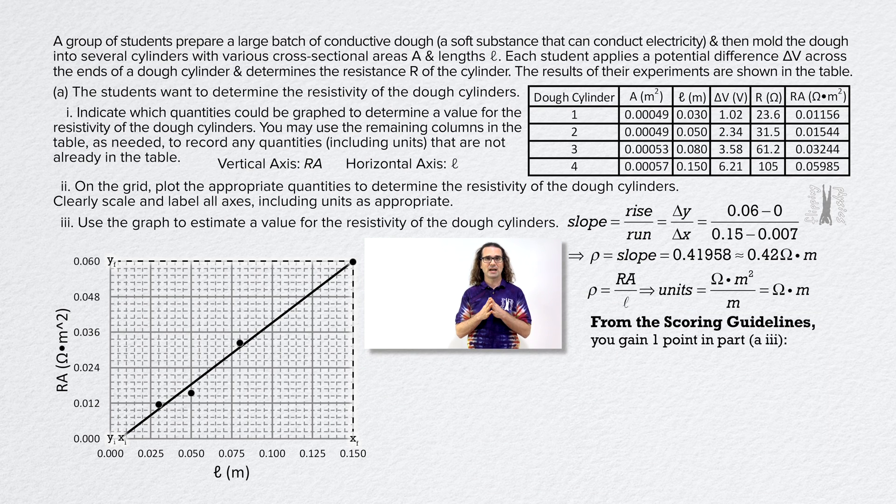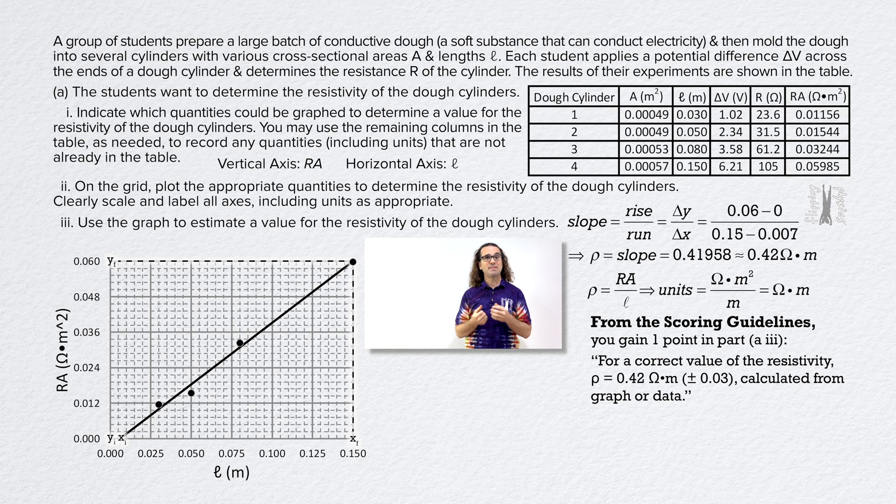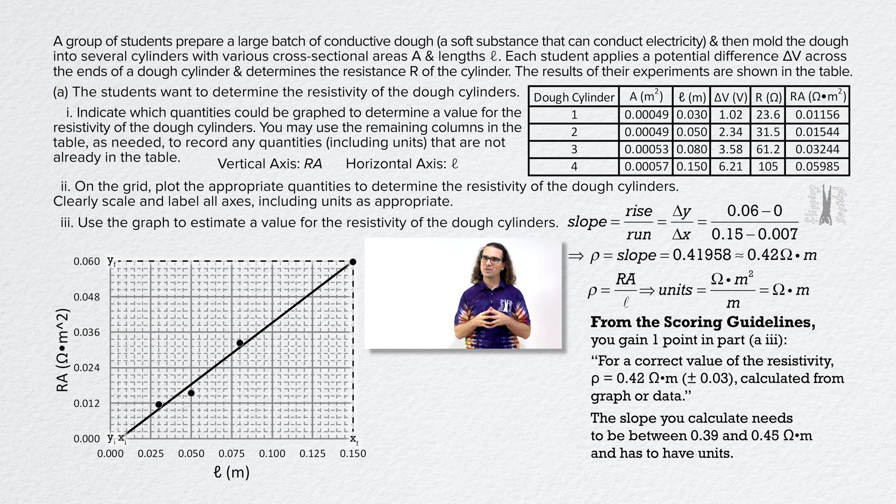More from the scoring guidelines. You gain one point in part AIII for a correct value of the resistivity equal to 0.42 ohmmeters plus or minus 0.03, calculated from the graph or data. Notice the slope you calculate needs to be between 0.39 and 0.45 ohmmeters and has to have units. So, please, be careful plotting your data, drawing your best fit line using your straight edge or ruler, and remember units.